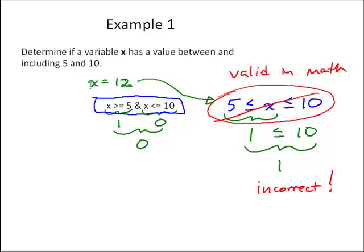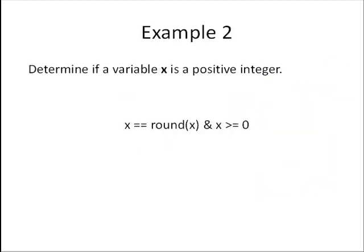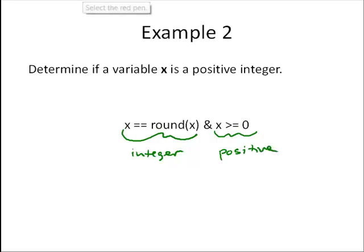Let's look at the second example. Determine if a variable x is a positive integer. We'll check two things. First, is x equal to round x? If x equals round x, since round x rounds to the nearest integer, that's checking if it's an integer. Second, is x greater than or equal to 0? That's checking if it's positive.